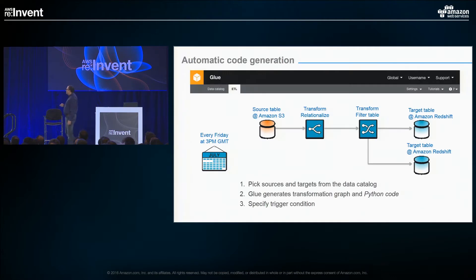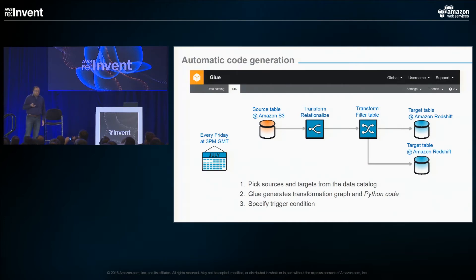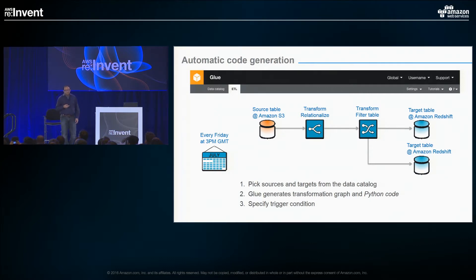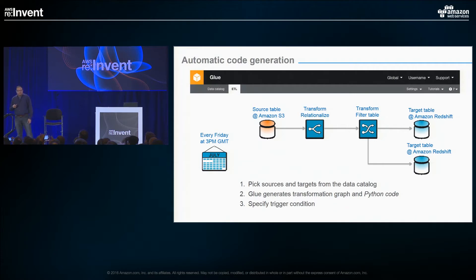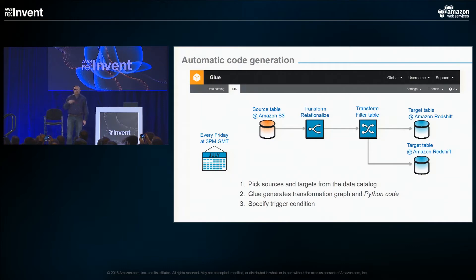The basics of it: you provide a source, you provide a target, and we go and generate code — Python code. It runs inside a Spark container, so it's scale-out. You can schedule a triggering condition like a calendar, a Lambda event, or some other criteria like pressure — like enough of these files have ended up inside S3, which you can do again using Lambda or some other trigger.